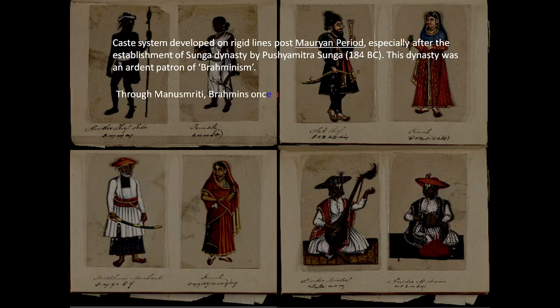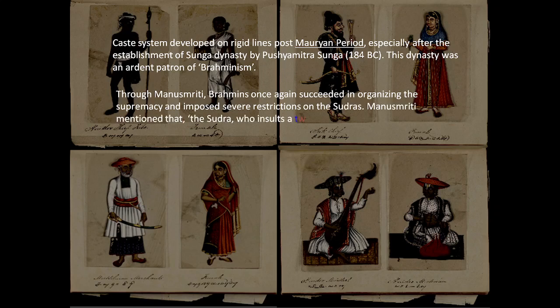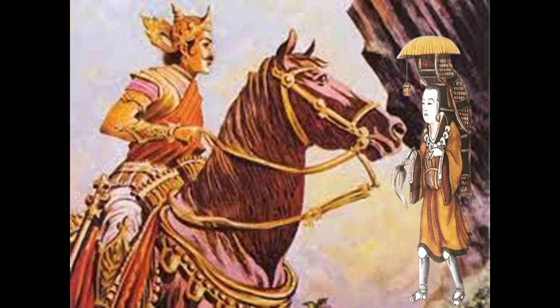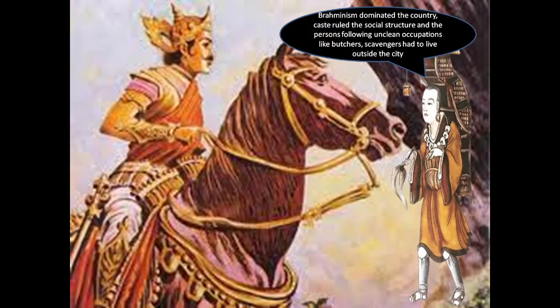Through the text known as Manusmriti, Brahmins once again succeeded in organizing their supremacy. Evidence of this caste system is found not only in Indian texts but also in foreign accounts. During the reign of King Harsha Vardhana, a foreign traveler from China named Xuanzang visited and noted that Brahminism dominated the society and caste ruled the social structure.